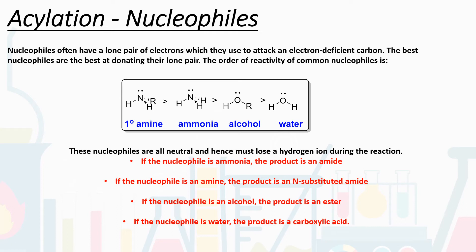If we react an acid chloride or acid anhydride with ammonia, the product is an amide — a carbonyl group attached to a nitrogen-based group. If the nucleophile is a primary amine, the product is an N-substituted amide, where another carbon group comes off the nitrogen rather than a hydrogen. If the nucleophile is an alcohol, the product is an ester. If the nucleophile is water, the product is a carboxylic acid — a carbonyl with an OH group. An ester has a carbonyl group and a single-bonded oxygen connected to an alcohol chain.